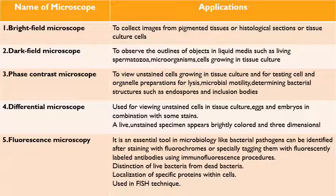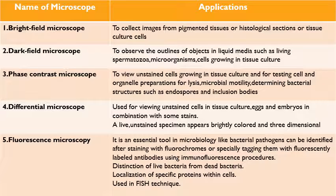Among the different types of microscopes, I will focus on the fluorescence microscope because it has immense uses in the research field. It is very essential in the microbiological field, can be used in the FISH technique, and one of its main uses is to observe the localization of specific proteins within cells. To use a fluorescence microscope, you must first stain the sample with fluorochromes — without this, you cannot see anything with the fluorescence microscope.